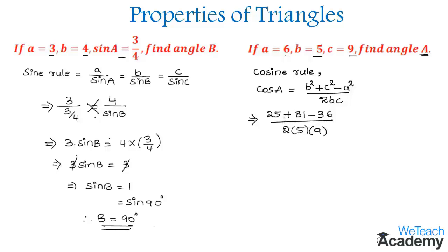By adding and subtracting we get 70 in the numerator, and by multiplying we get 90 in the denominator. This equals 7/9.